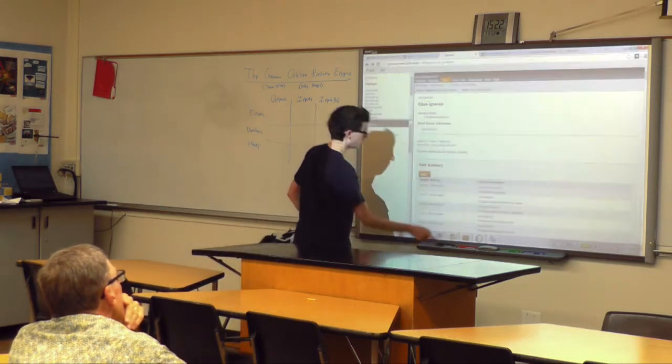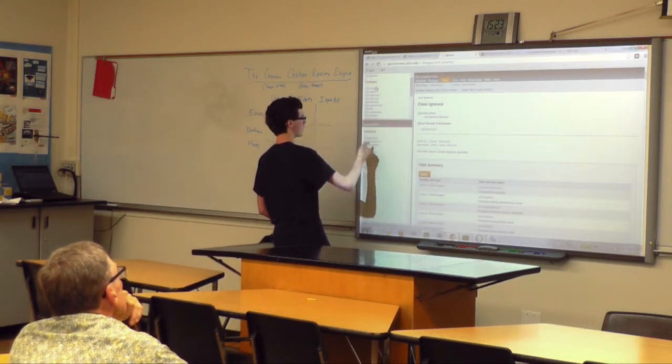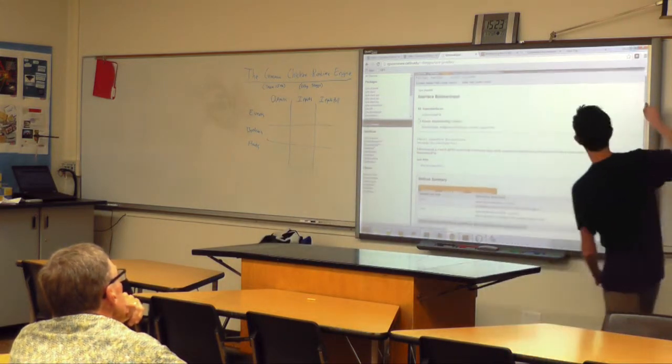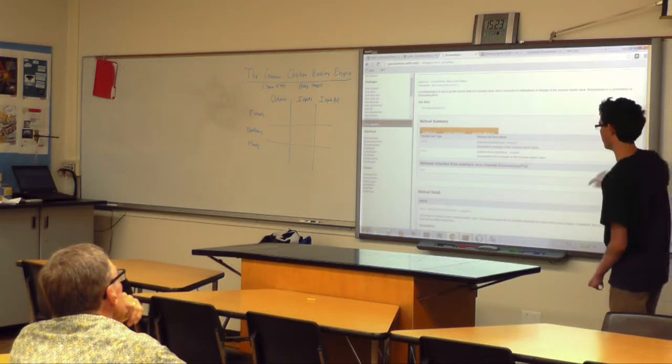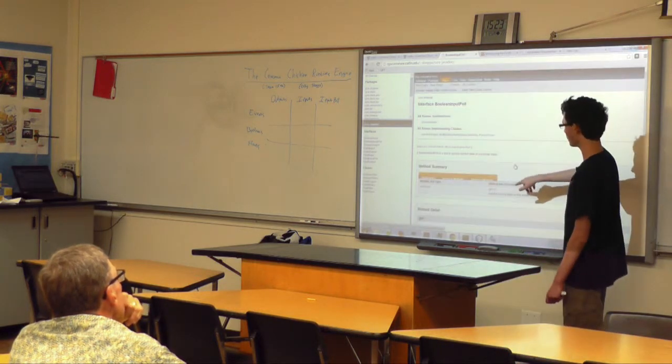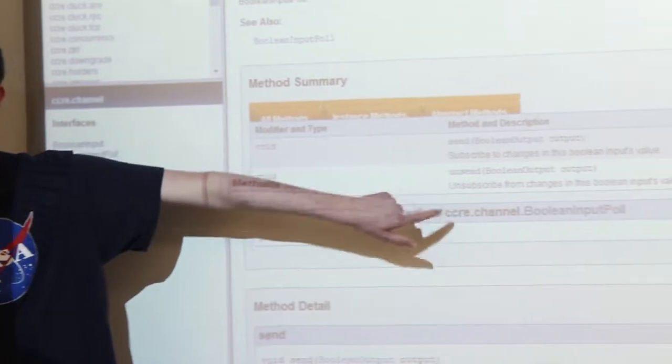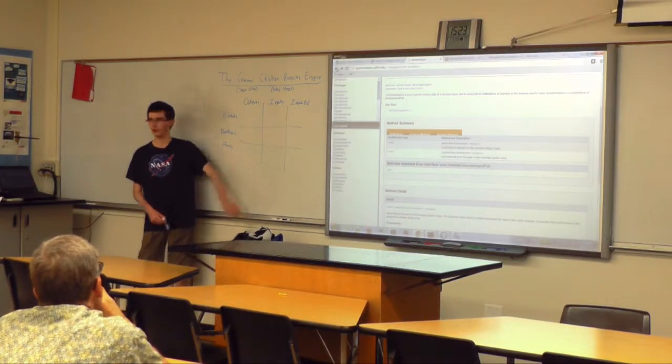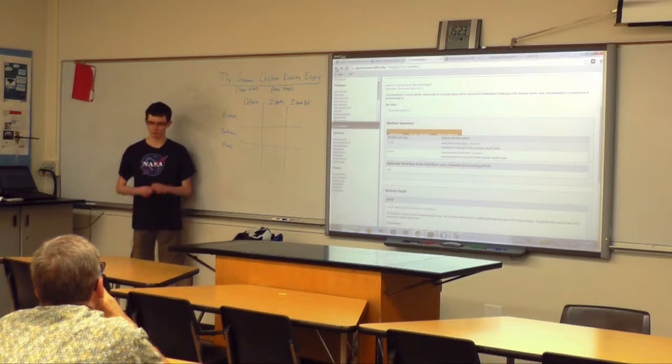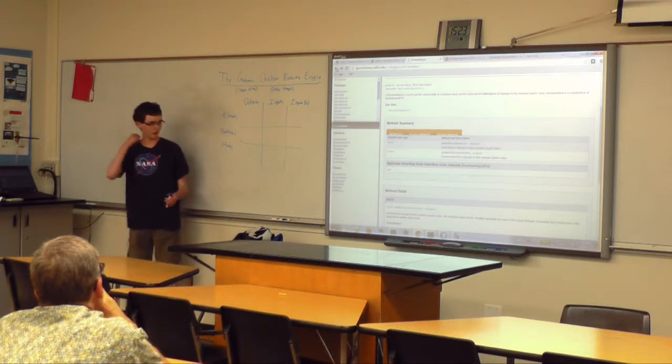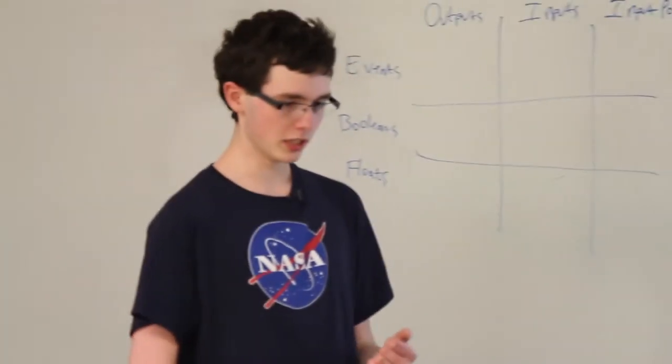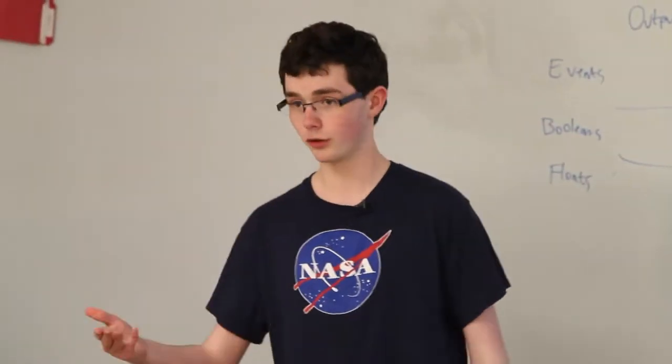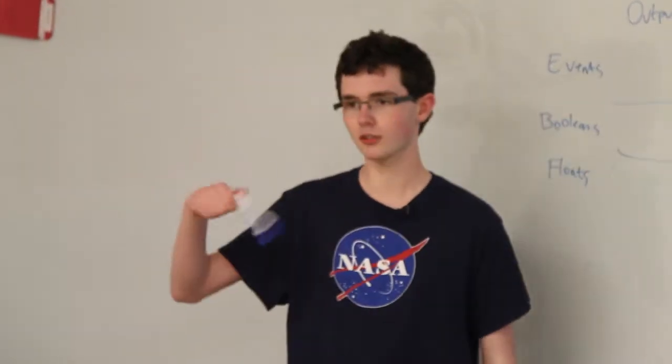If you look in the documentation, a Boolean input lets us get the current state or connect it to Boolean output. Everything you work with in this system goes through this. You don't have a solenoid class, you have a Boolean output. This is useful because then you can change stuff around however you want. If you had a solenoid and want to change to a servo, you have to change every single place you would use that solenoid.